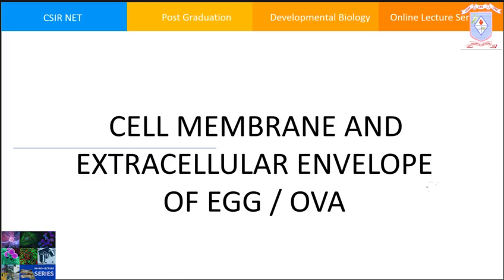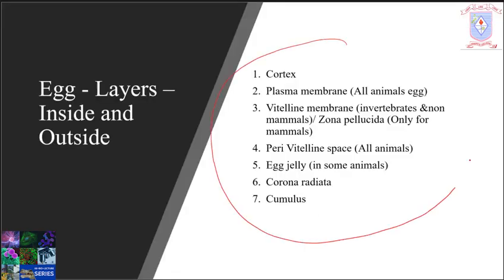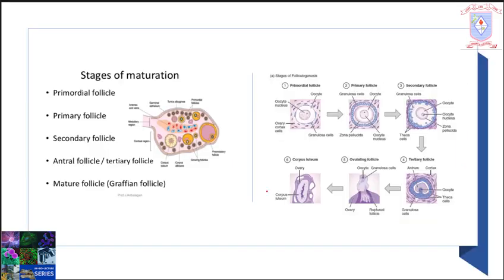Before that you must know about the various layers around the egg. These are the layers of the egg in general, and the cortex is the only layer which is positioned inside the egg plasma membrane. The plasma membrane is the same as any other cell, and all the other layers listed in this slide will be discussed in detail in coming slides.